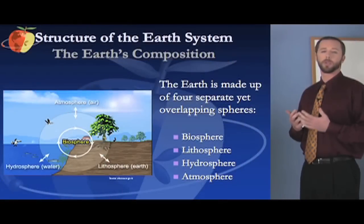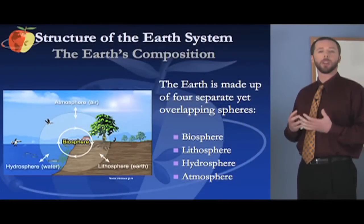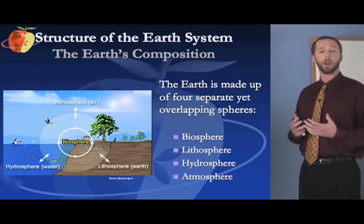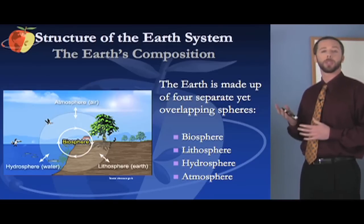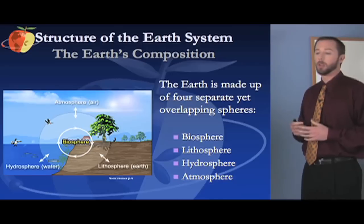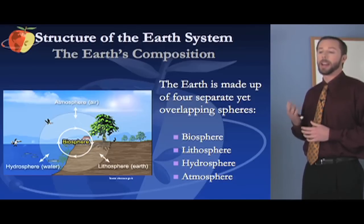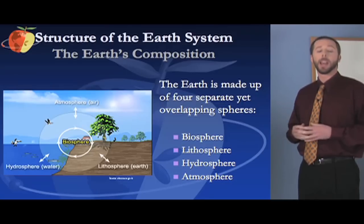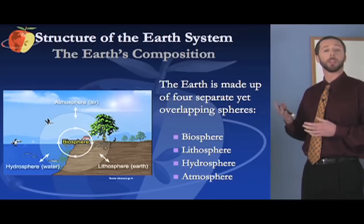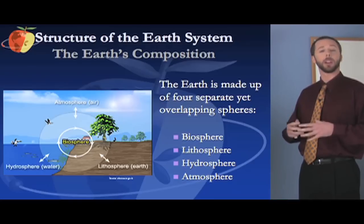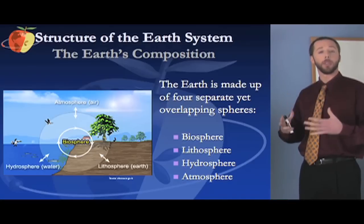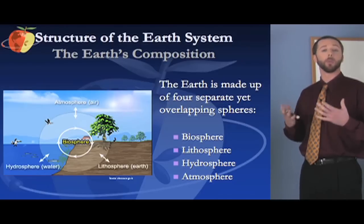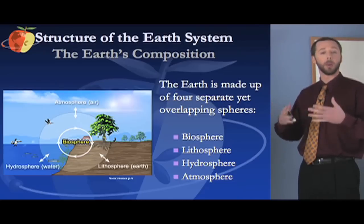The earth's composition and the structure of the earth's system. For the exam, there's some terminology that you want to know that will come up pretty frequently on the test. These four terms are important ones to know: biosphere, lithosphere, hydrosphere, and atmosphere. The biosphere is the portion of the earth in which living things live, and that can include all three of the other spheres. The lithosphere is the rock or the ground. The hydrosphere is all of the portions of the earth that are covered with water — hydro meaning water. And the atmosphere is the air.